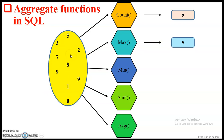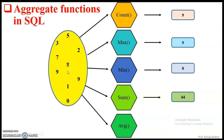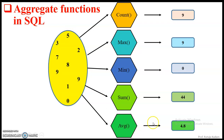The MIN function will return the minimum value in the set, which is zero. Then comes the SUM function — it will add up all the values in the set and return the value, which is 44. The average function will return the average value of the set, meaning it will add the values divided by the total count. That means 44 divided by nine, which gives approximately 4.8.